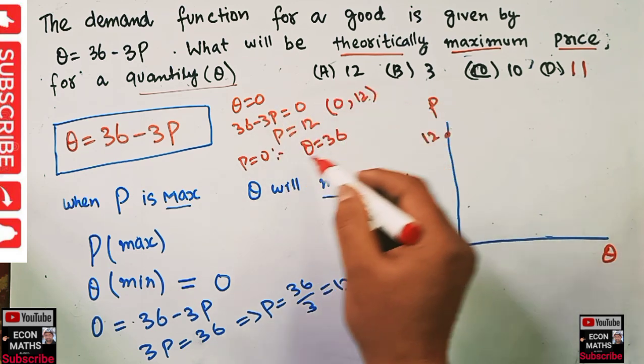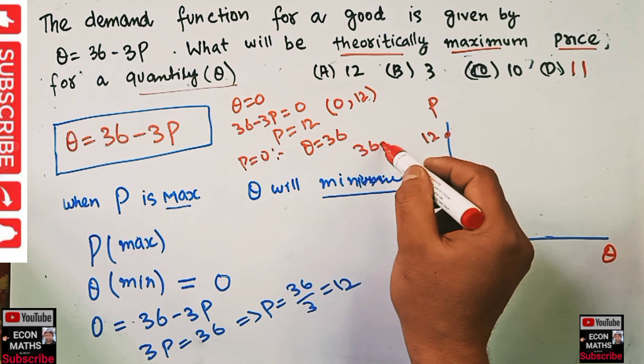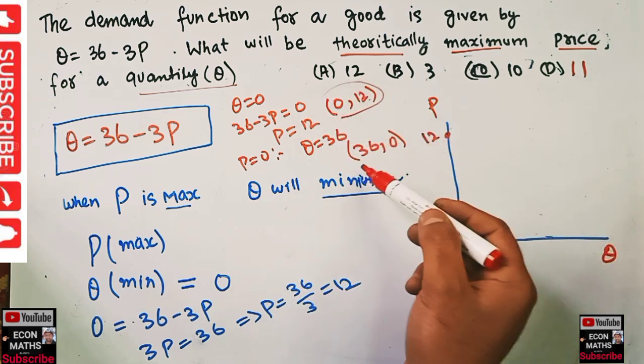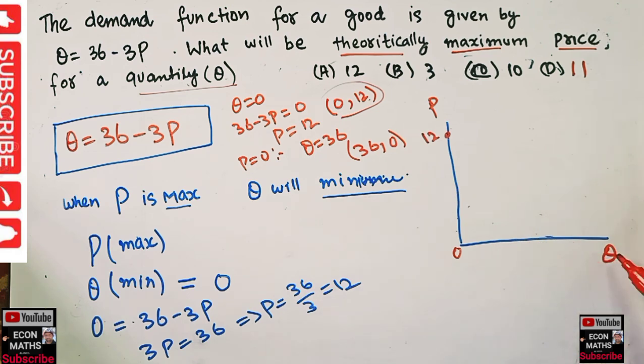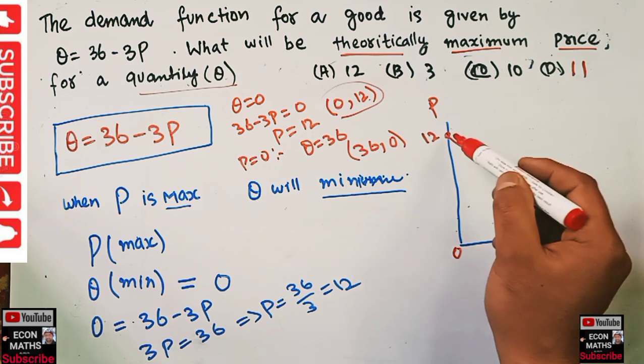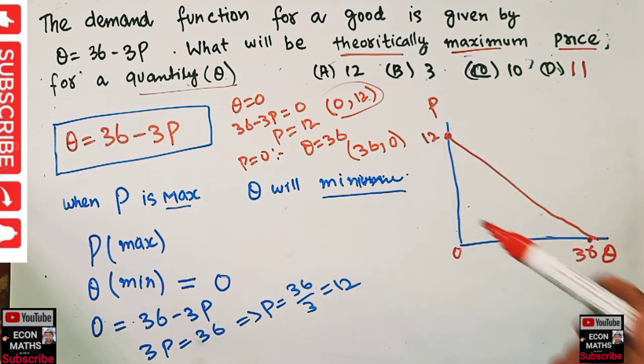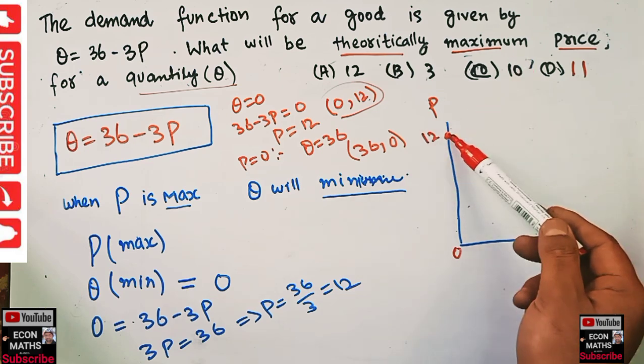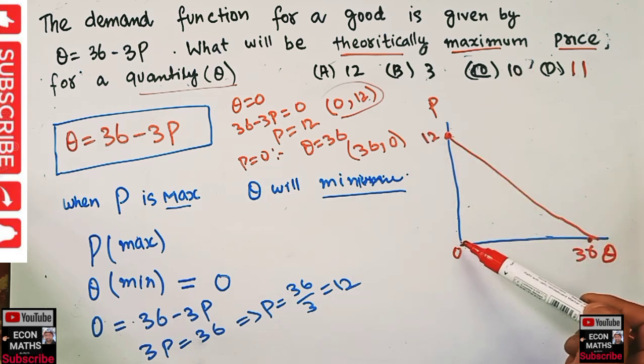We have (0, 12) and (36, 0). When we plot this, (0, 12) is plotted here and 36 is on this axis. The intercepts are 36 and 12. Now, maximum possible price theoretically will be 12 when quantity demanded is minimum. I hope I made myself clear in this video. Thank you.